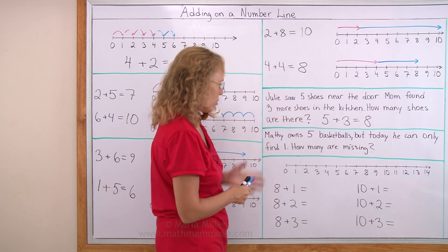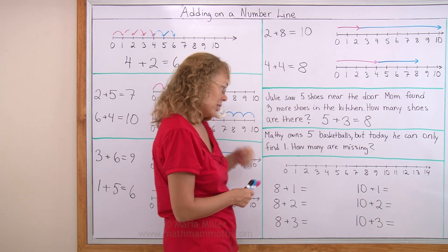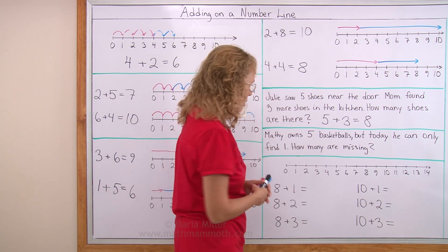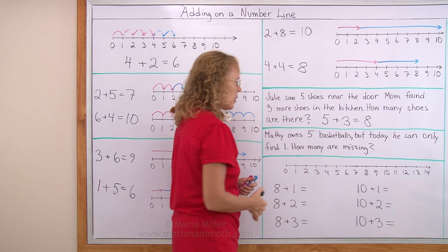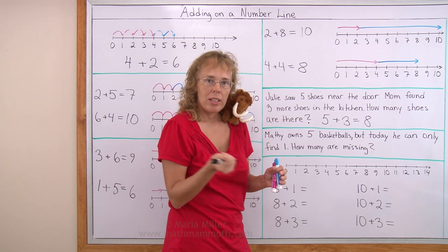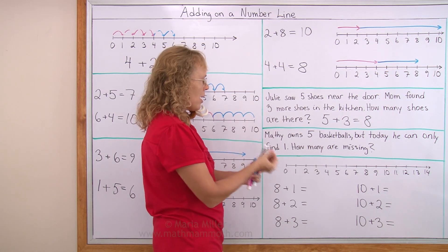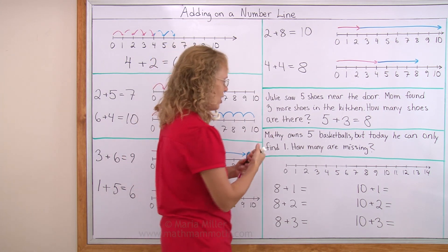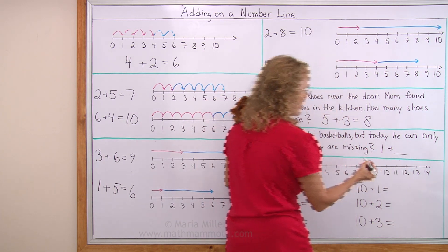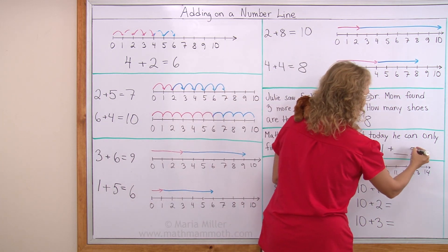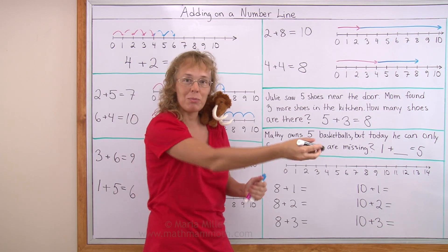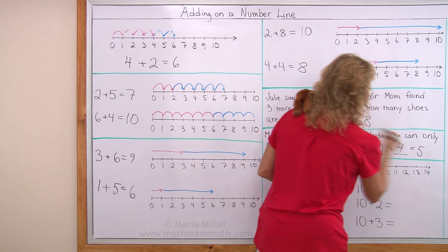Matty owns 5 basketballs. Do you like playing basketball? Sure, he likes basketball. But today he can only find one. Is your house messy too, Matty? How many are missing? I will write how many more additions. He has one that he can find. And then if he finds those missing ones, then he will have 5. So how many are missing? 1 plus how many would make 5? 4, right. Good job.